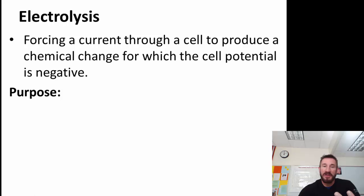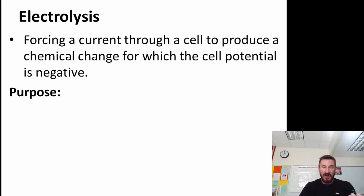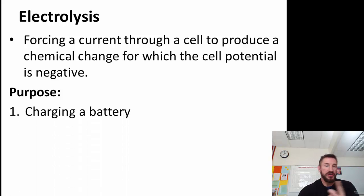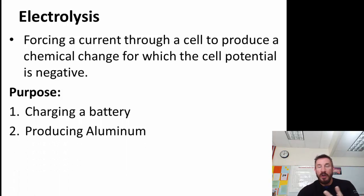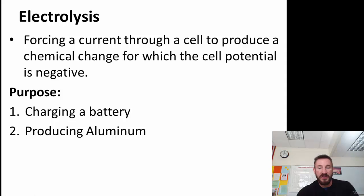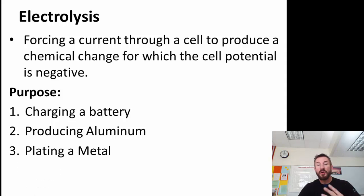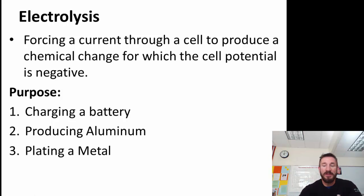The purpose — why do you do this? We know we have voltaic cells because we get energy out of those. What is the purpose of using electrolysis? It's actually for what we get from the reaction. One, it's a way to charge a battery. Two, we can make pure metals — for example, aluminum. You can make pure aluminum through the process of electrolysis. Third, you can plate a metal — use electrolysis to make a metal be plated on top of another metal.